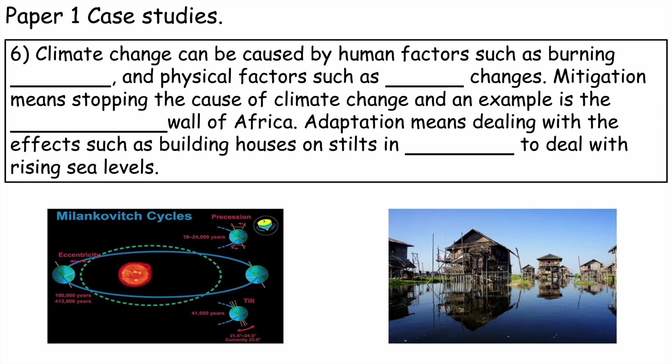Next: climate change. Climate change can be caused by human factors such as burning fossil fuels, and physical factors such as orbital changes. Mitigation means stopping the cause of climate change, and an example is the Great Green Wall of Africa. Adaptation means dealing with the effects, such as building houses on stilts in Vietnam to deal with rising sea levels.